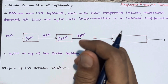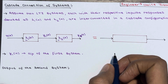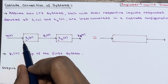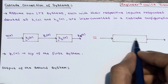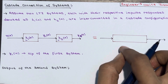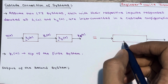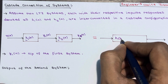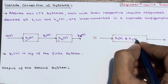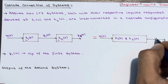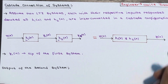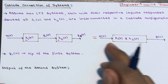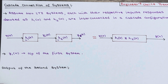The conclusion here is that two cascade connected discrete-time systems with impulse responses h1(n) and h2(n) can be replaced by a single equivalent discrete-time system whose impulse response is given by the convolution of the individual impulse responses — the convolution of h1(n) and h2(n) — with input x(n) and output y(n). This is the cascade connected discrete-time system and its equivalent system.